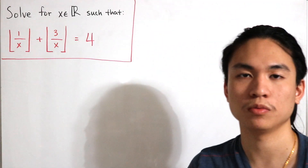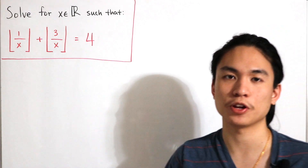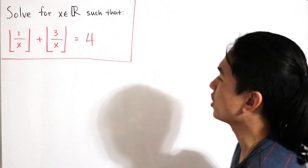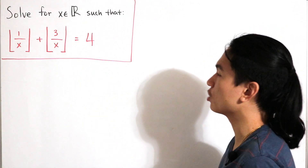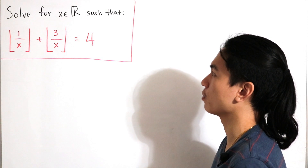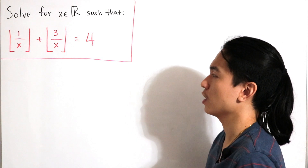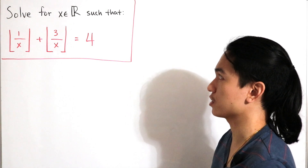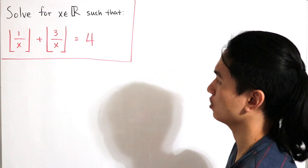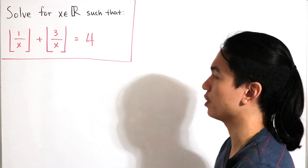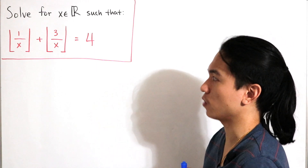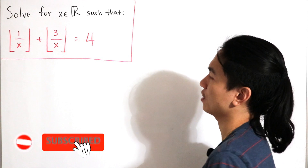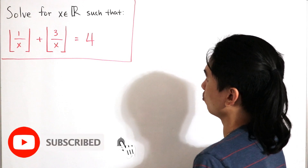Welcome back to another video. Today we have a floor equation to solve: find all real numbers x such that the floor of 1 over x plus the floor of 3 over x is equal to 4.